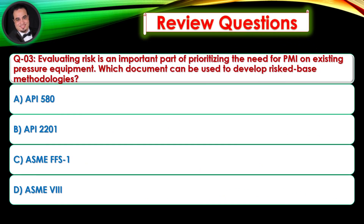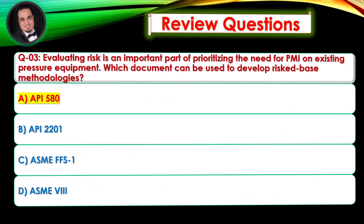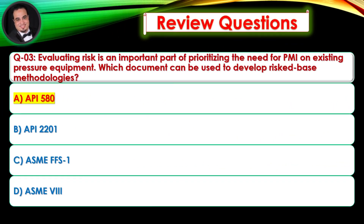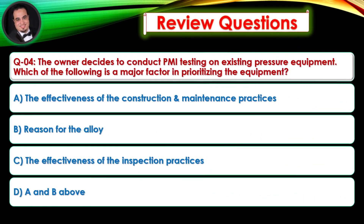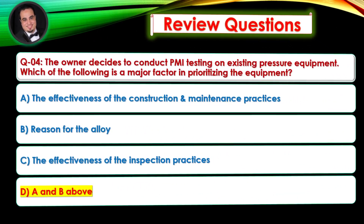Question 3: Evaluating risk is an important part of prioritizing the need for PMI on existing pressure equipment. Which document can be used to develop risk-based methodologies? — Answer is A. Question 4: The owner decides to conduct PMI testing on existing pressure equipment. Which of the following is a major factor in prioritizing the equipment? — Answer is D.